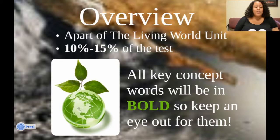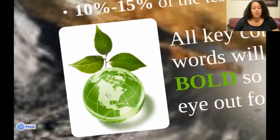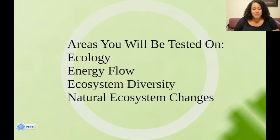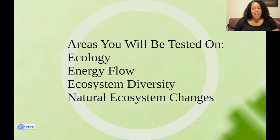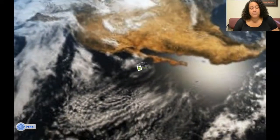Here's a quick overview. Ecosystems is a part of the Living World Unit. It's about 10 to 15% on the test. All the key concept words will be in bold, so keep an eye out for them. Here are the areas that you'll be tested on: ecology, energy flow, ecosystem diversity, and natural ecosystem changes.